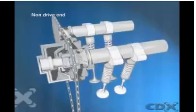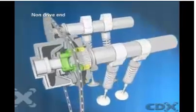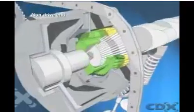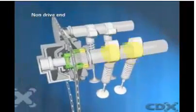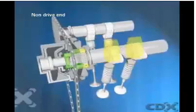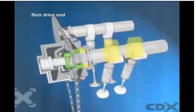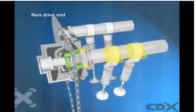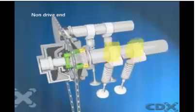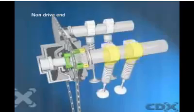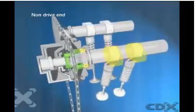Cam phasing VVT varies valve timing by shifting the phase angle of the camshaft. At high engine speeds, the inlet camshaft phasing can be rotated in advance to enable earlier intake, increasing the amount of valve overlap. This is controlled by the engine management system and actuated by hydraulic valve gears.